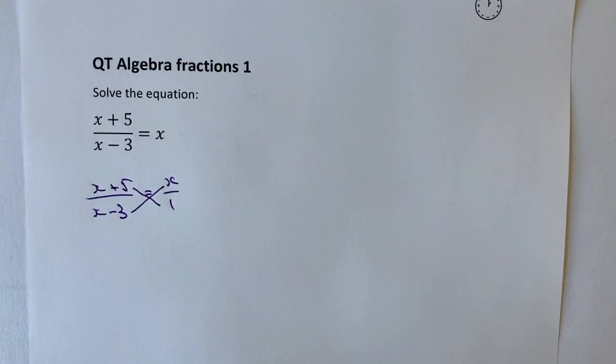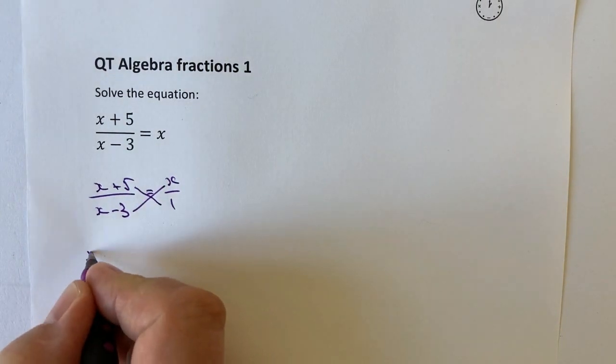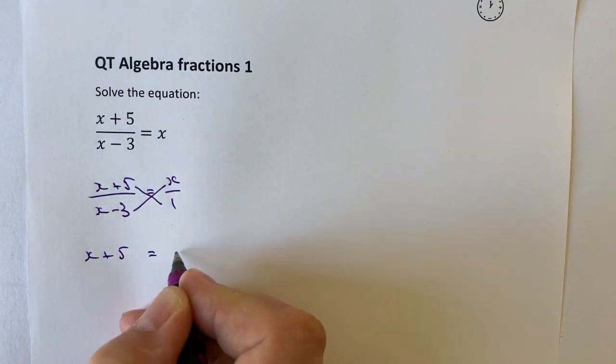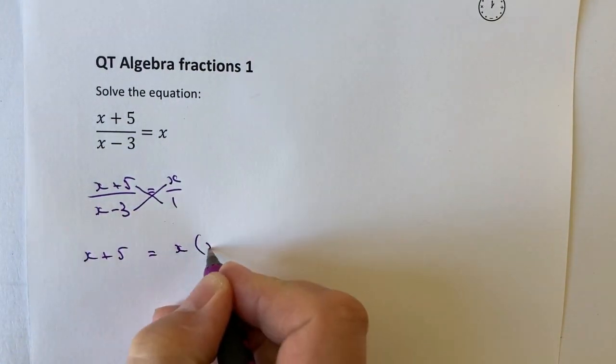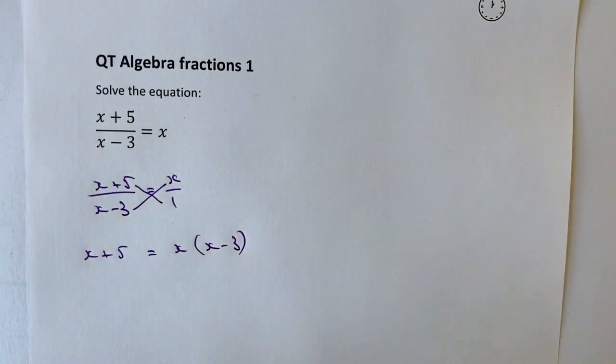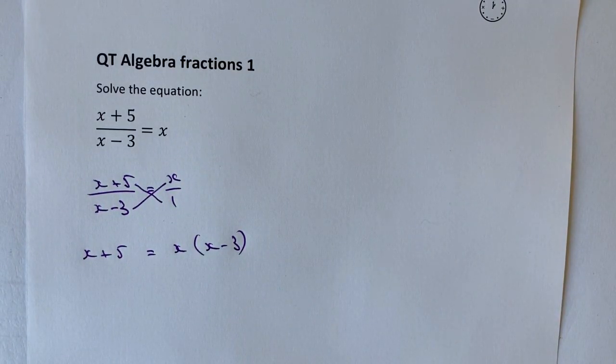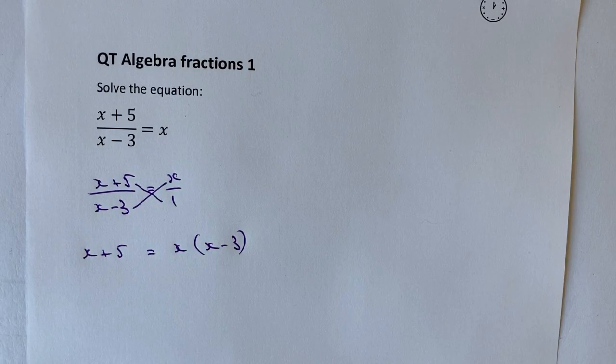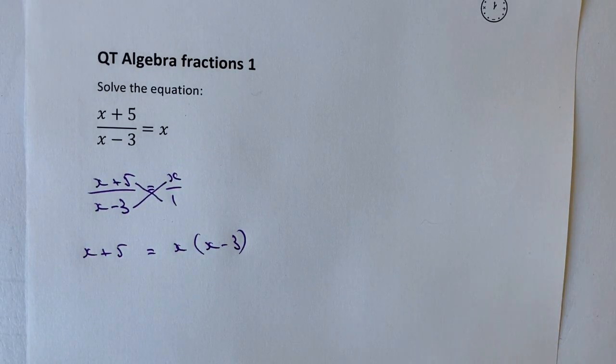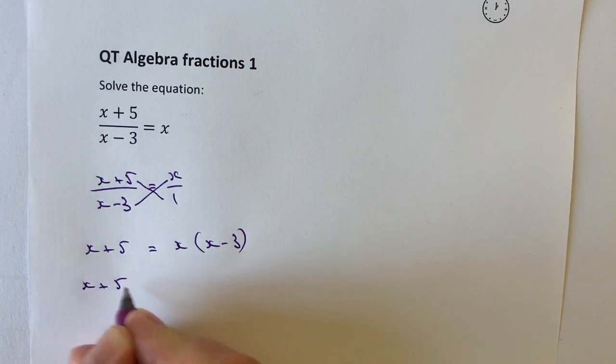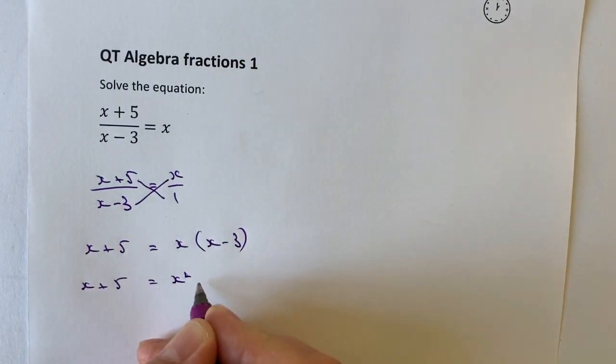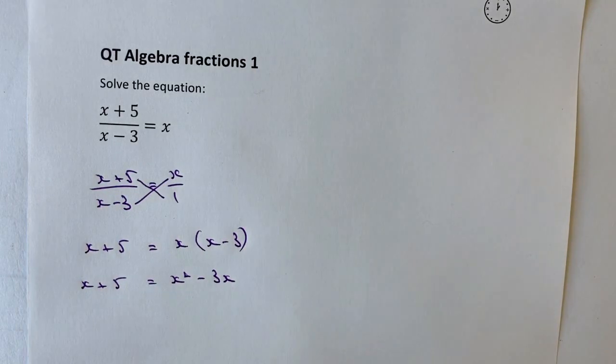And so what I end up getting is x plus 5 on the left-hand side, and on the right-hand side I've got x times x minus 3. And then really it's just a case of solving this for x. So let's firstly get rid of those brackets. If I multiply out, I've still got x plus 5 on the left, but on the right I've got x squared minus 3x.